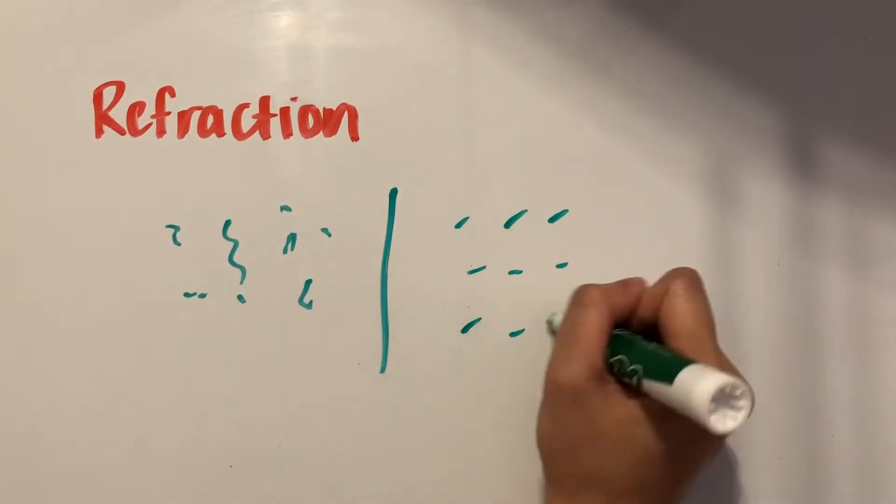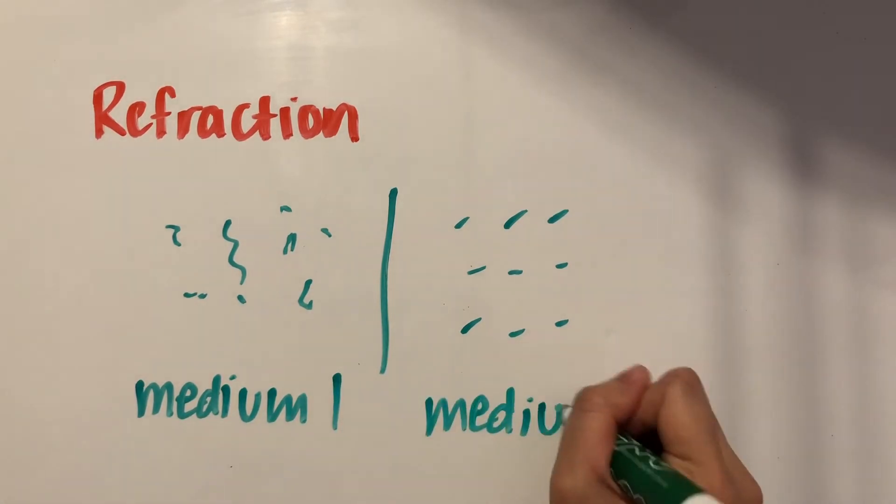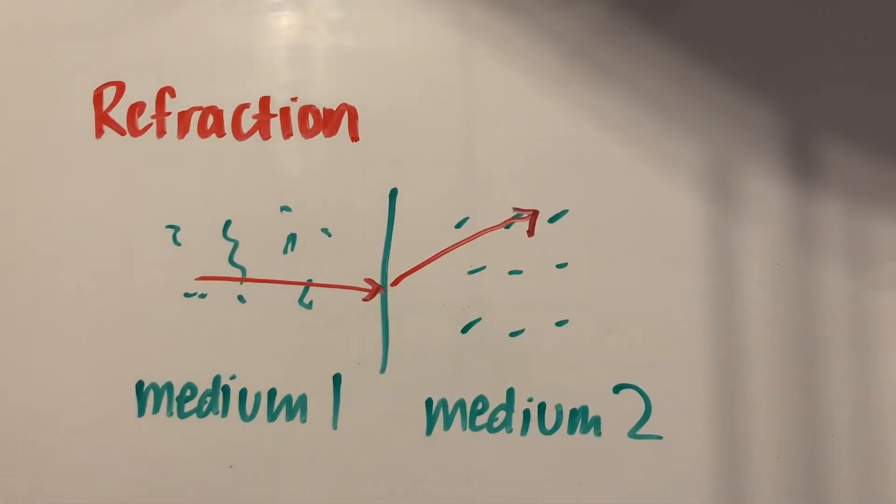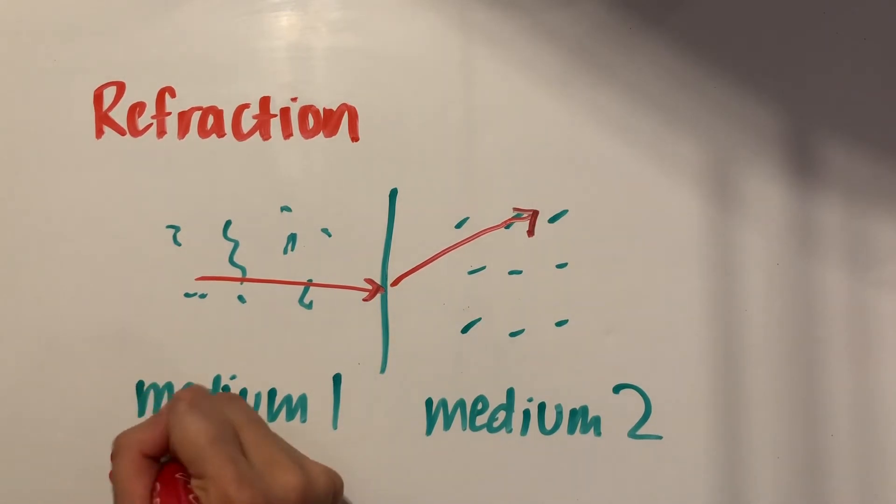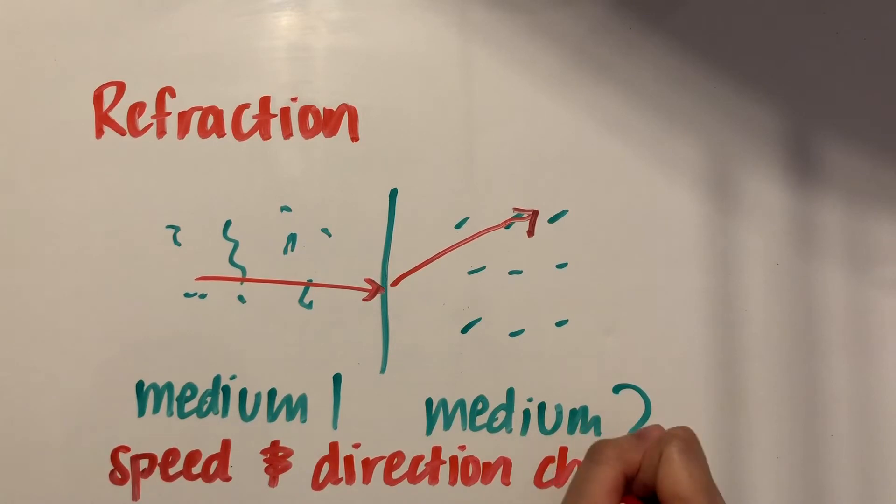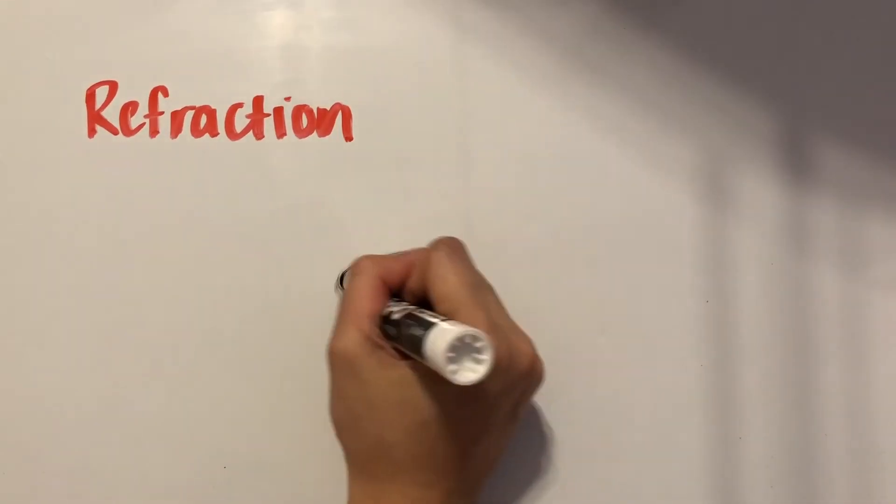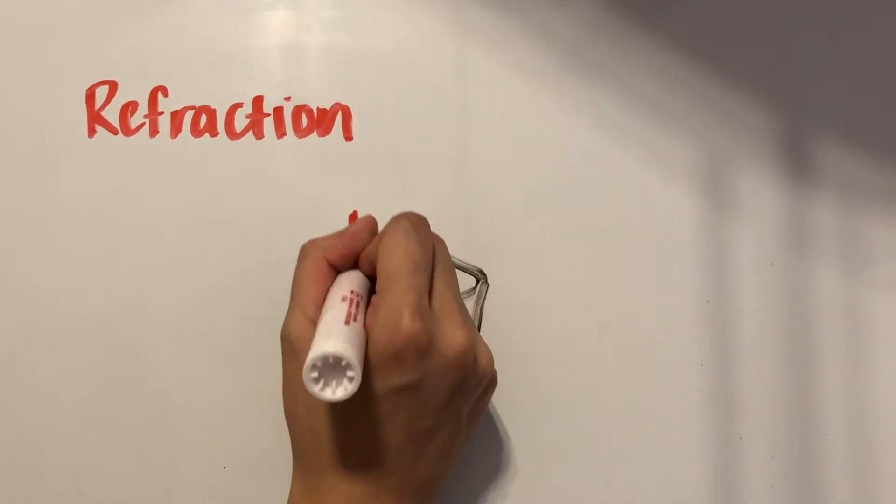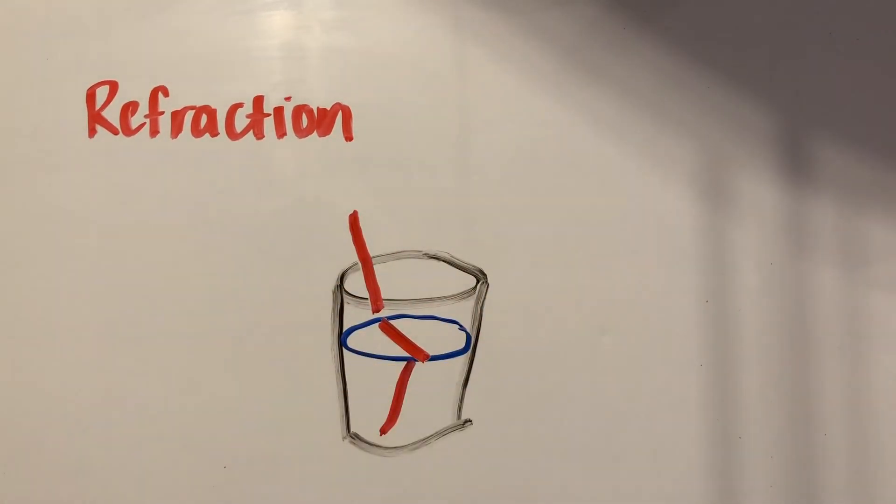Refraction happens when the medium that the wave is traveling in changes. Depending on the material, more or less energy might be required for the wave to propagate, meaning that it can result in a change in the wave's speed. When the wave's speed changes, its direction changes too. So a light wave looks like it's bending when it hits a new medium, such as water, making a straw that's already in the water look a little disoriented.